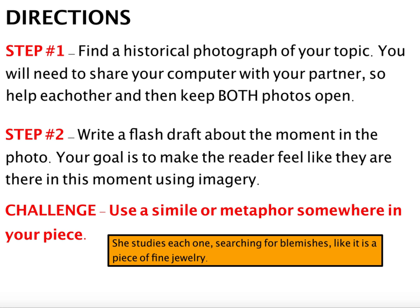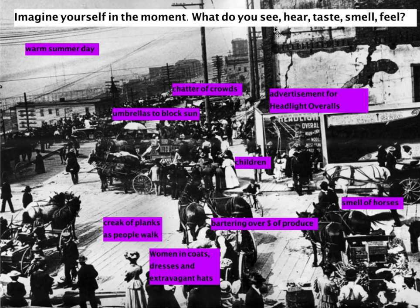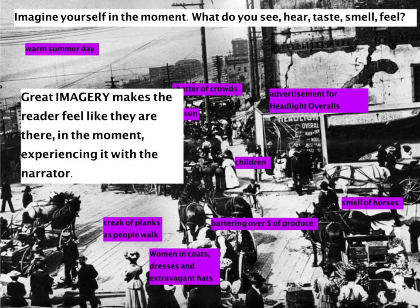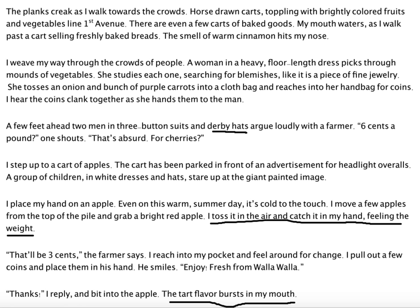Step two: you're going to write a flash draft about the moment in the photograph. Your goal is to make the reader feel like they are there in this moment using imagery. Challenge yourself to use a simile or metaphor somewhere in your piece — for example, I used the simile 'she studies each one searching for blemishes like it is a piece of fine jewelry.' Remember, today your goal is to ask yourself what you see, hear, taste, smell, or feel in this historical photograph, and then really paint a picture for the reader. Make the reader feel like they're there experiencing this historical moment with the narrator. Okay, get started — have fun!